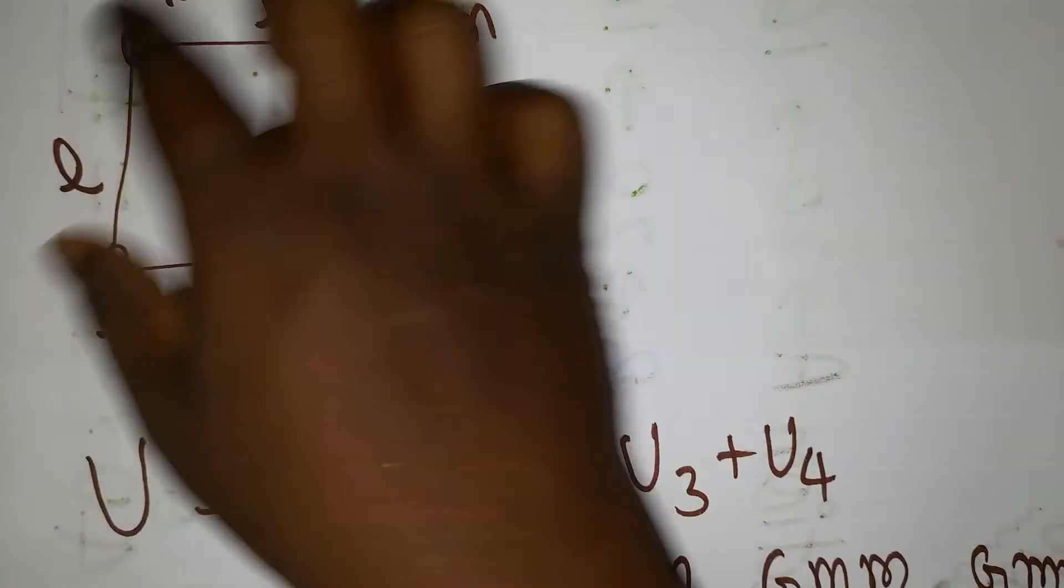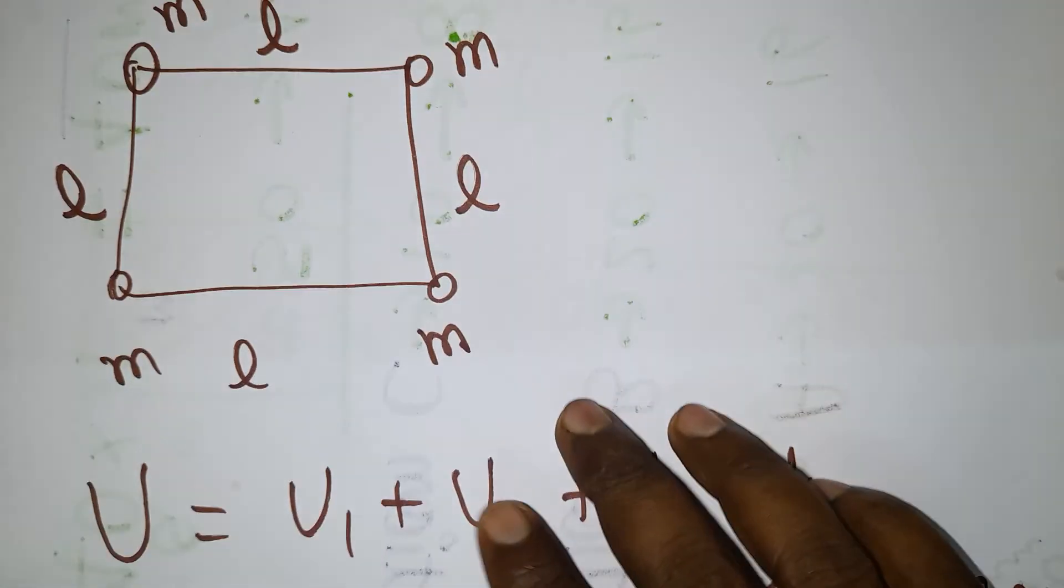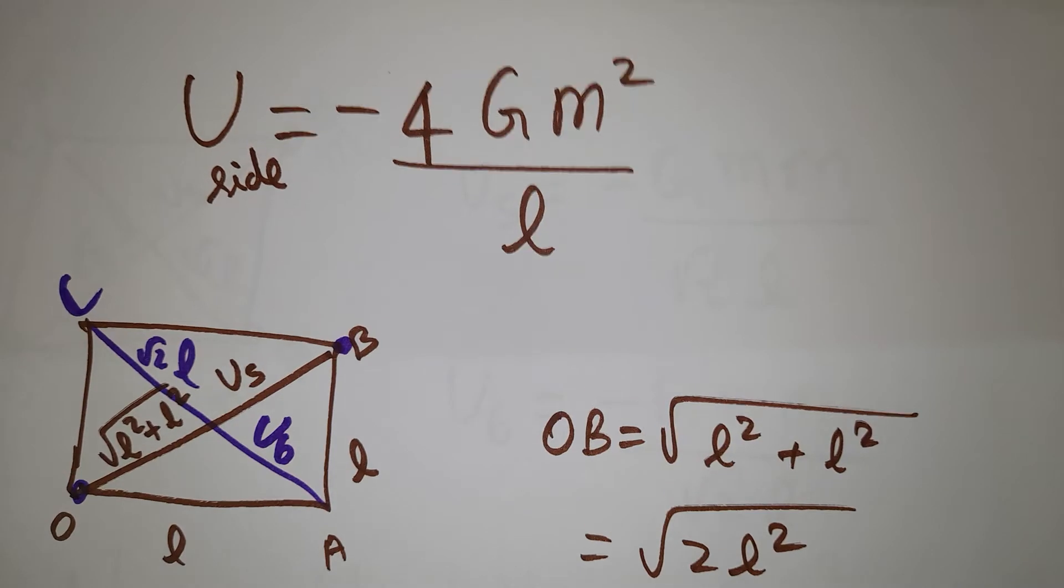Next thing, we should also take the diagonal. There are 2 diagonals, so totally 6 energies will be there. The sides will be this much total energy.